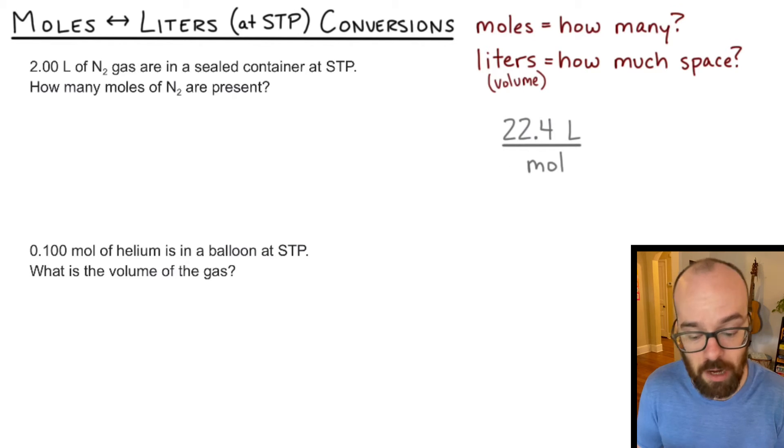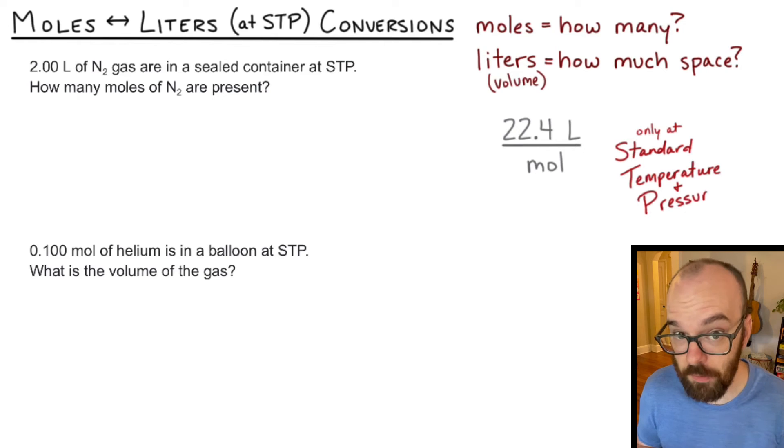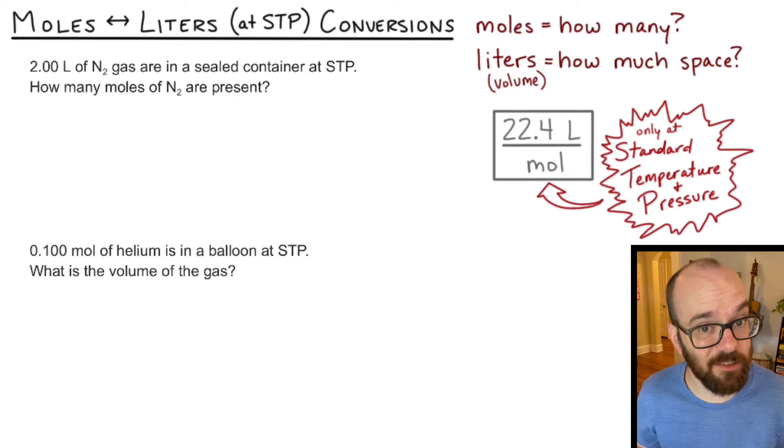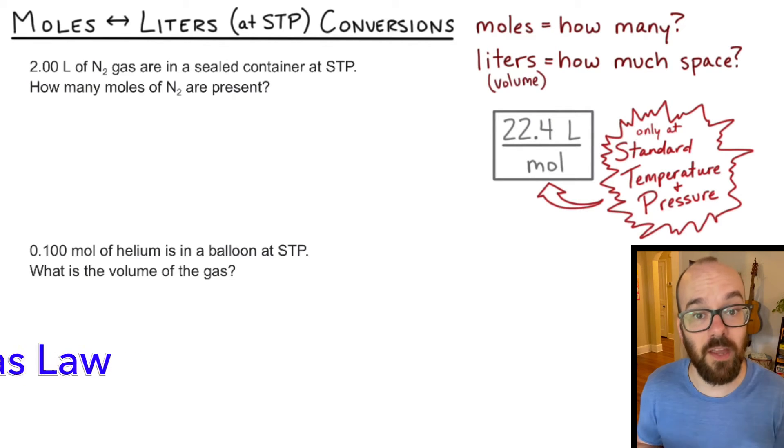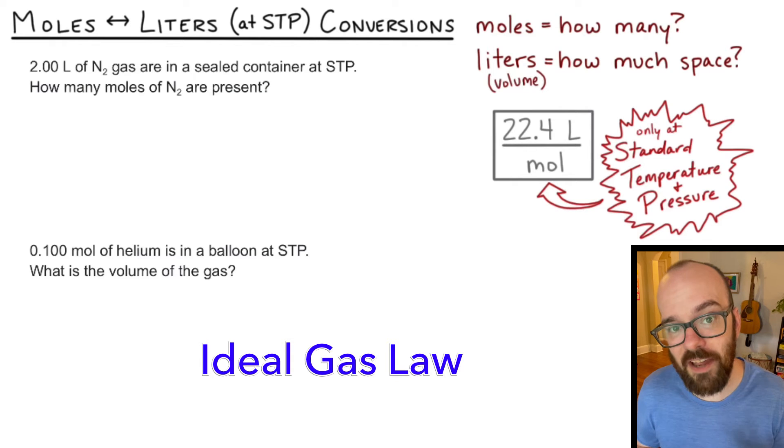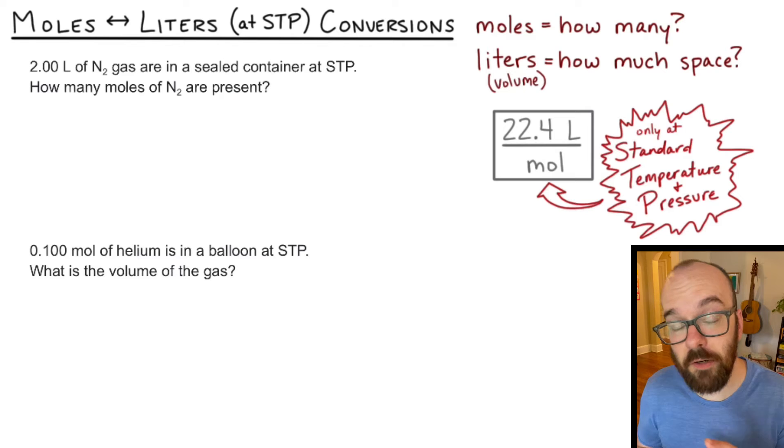This conversion factor, we usually write without the one. So we'll just write 22.4 liters per mole. And important to remember, this is only true at standard temperature and pressure. If we're not at standard temperature and pressure, then we'll have to use something called the ideal gas law. The ideal gas law will probably be covered in a whole different unit in your chem class. So in this video, we're only looking at standard temperature and pressure problems, where we can use this 22.4 liters per mole.